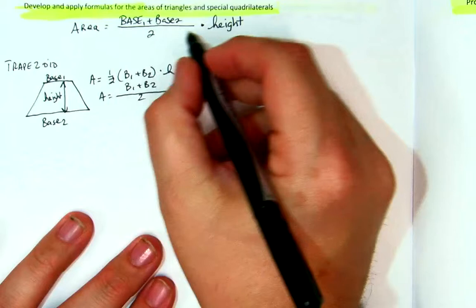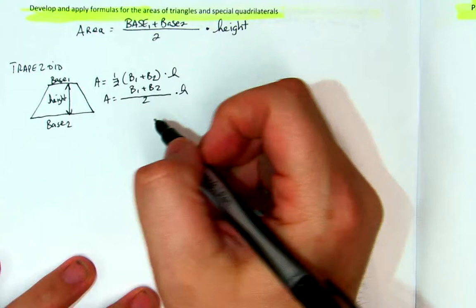So that's traditionally what the trapezoid is, but I want to show you how this works for every single shape that we have. Let's say we have a triangle.